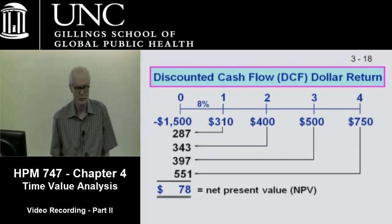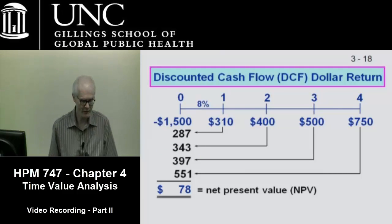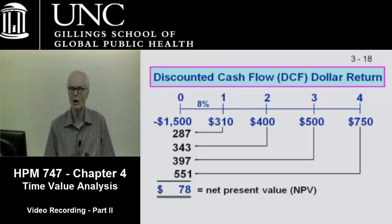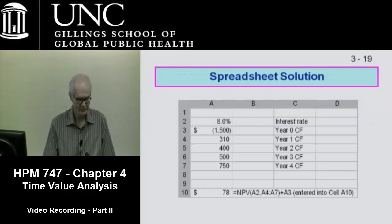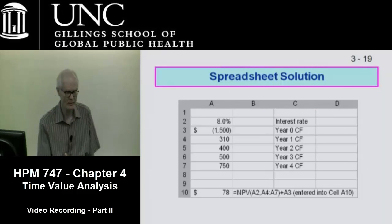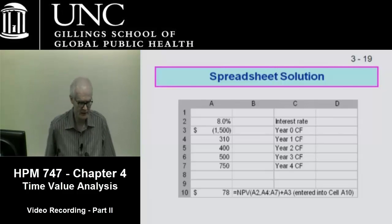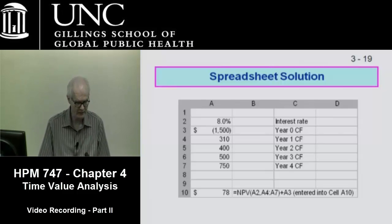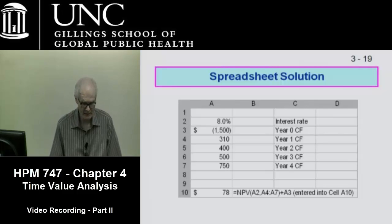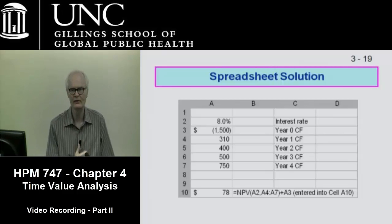So what do we have to do? We have the net capital cost of $1.5 million, which is in today's dollars, so that doesn't need to be discounted. We're going to bring all the other cash flows back to zero, and we get a net present value of $78. We use the NPV function in Excel — the first thing it wants is the interest rate, which is 8%, then the cash flows to discount, A4 through A7. On the outside of the equation, we add in A3, negative 1,500.